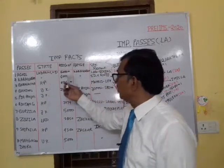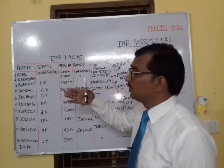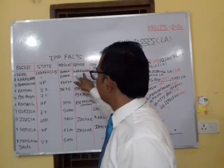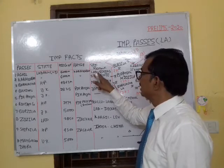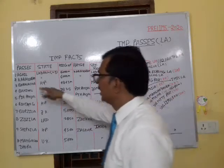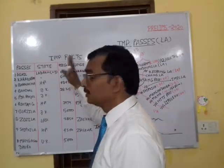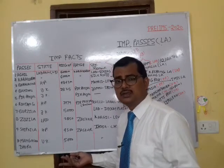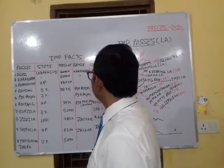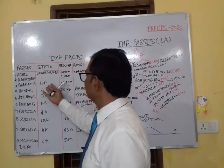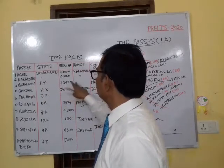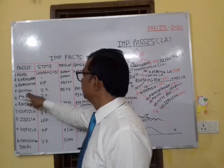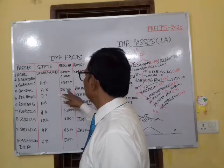Here is a chart which is very useful for you. Aghil pass is situated in Ladakh, has a height of about 5000 meters, is in the Karakoram range, and connects the Ladakh region to the Xinjiang state of China. Karakoram pass is situated in Ladakh with a height of 6000 meters — most of the time throughout the year it is covered with ice. It is situated in the Karakoram range and is known as the Silk Route. Bara Lacha La is situated in Himachal Pradesh with a height of 4843 meters, in the Greater Himalaya, and connects Manali to Leh.